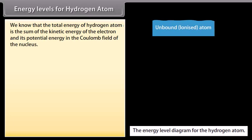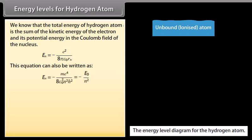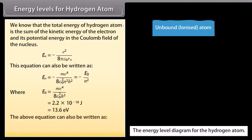Energy levels for hydrogen atom. We know that the total energy of hydrogen atom is the sum of the kinetic energy of the electron and its potential energy in the Coulomb field of the nucleus. E_n = -e²/(8πε₀r_n). This equation can also be written as E_n = -me⁴/(8ε₀²n²h²), where E₀ is equal to me⁴/(8ε₀²h²). E_n = 2.2 × 10^-18 joule, which is equal to 13.6 electronvolt.